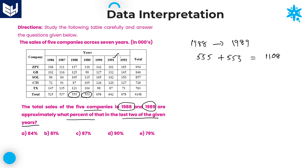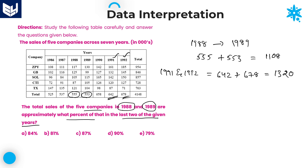1991 total value is 642 and 1992 total value is 678. Adding these: 642 + 678 = 1320. Now the question is: 1108 is what percentage of 1320? The calculation is 1108 divided by 1320, multiplied by 100.